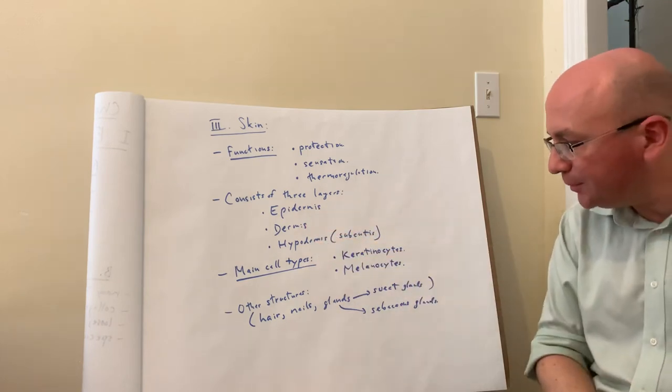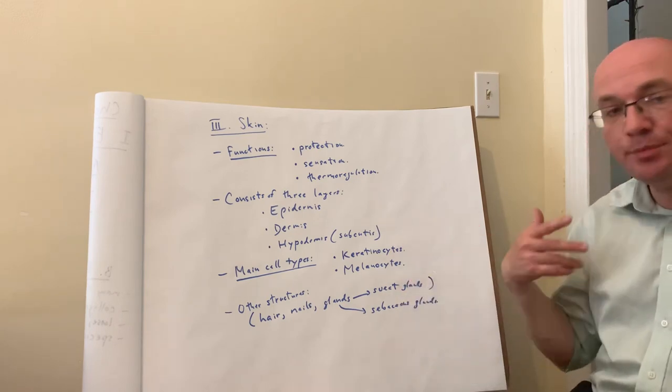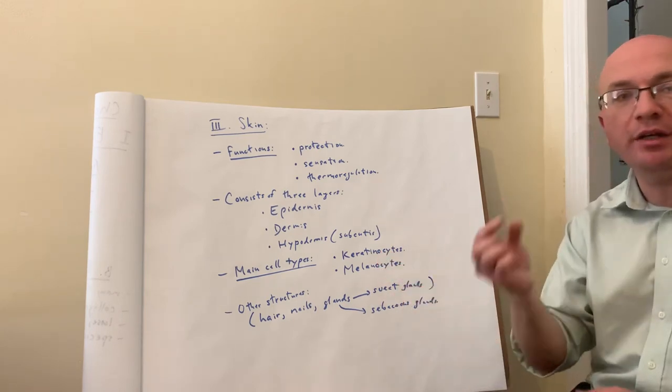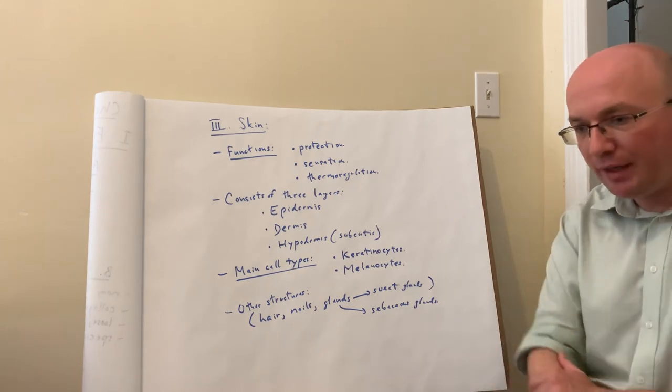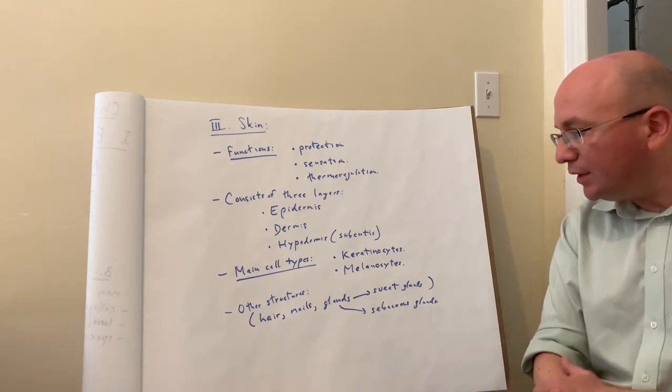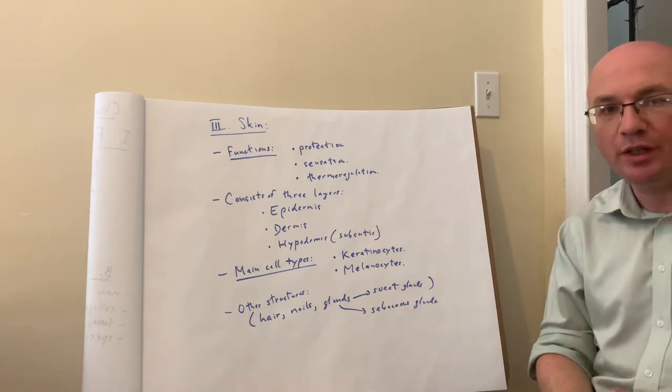For the main cell types in the skin, the skin consists of cells that produce keratin, called keratinocytes. Keratin is the protein that makes up hair and nails and the top layer of the skin, the cornified layer. Keratinocytes—most cells in the epidermis are keratinocytes producing keratin.